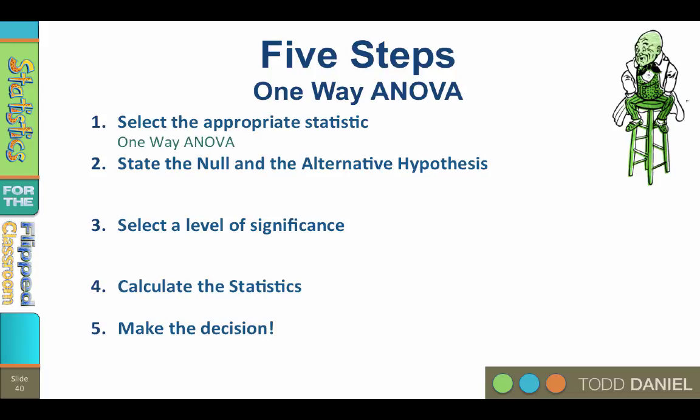Step two, state the null and alternative hypothesis. Our null hypothesis is that the means of each of the four regions are the same. We would write this null hypothesis as H₀: μ₁ = μ₂ = μ₃ = μ₄.